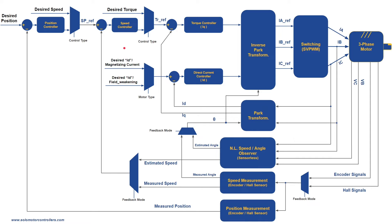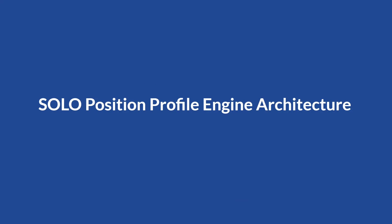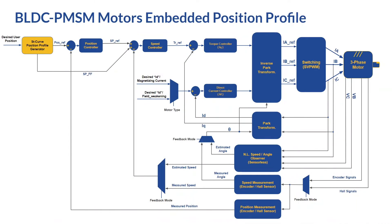The position profiling and velocity profiling in SOLO are useful for speed control and position controlling applications. In the position profile engine architecture, the whole field oriented control architecture remains as before, with the difference that the user input goes into the ST curve position profile generator engine. That engine provides the position reference for the position controller, and also a feed-forward output to smooth the position controller output. As a result, the user provides only a single target position to this engine, and the engine takes care of all the rest to provide a very smooth transition from point A to the target position.